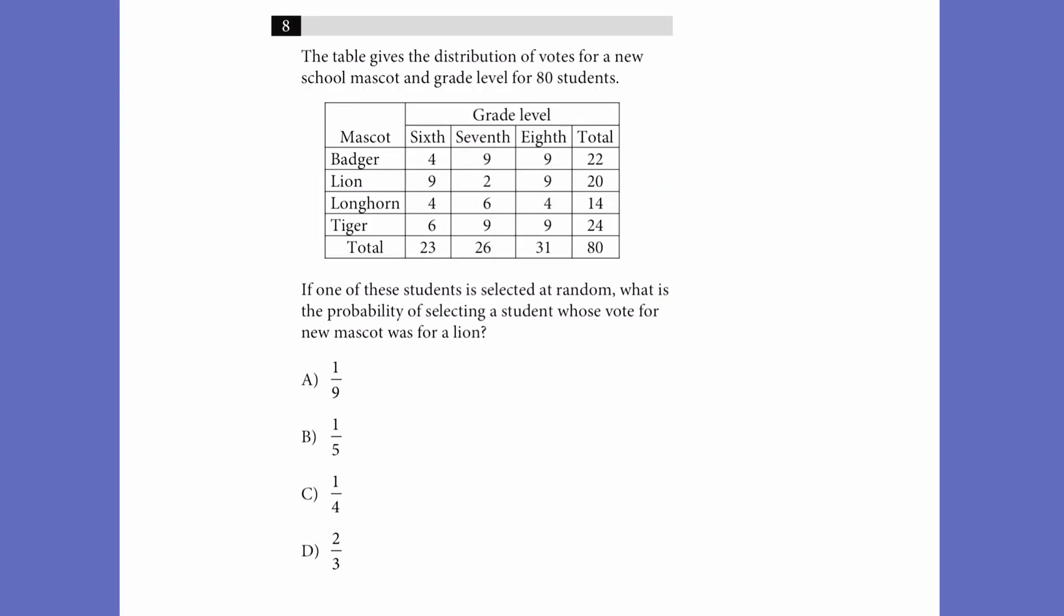So this is the trickier type of probability question that you'll see. It's reading these tables and deciphering what they want you to pick out of the table. So you need to make sure that you're reading the right values for these. So the table gives the distribution of votes for a new school mascot and grade level for 80 students. If one of these students is selected at random, so that's the pool we're choosing from, is just all of the students, what is the probability of selecting a student whose vote for the new mascot was a lion? So we don't really care about grade level at all here. We just care about who wanted the lion in total. So in this case, we see grade level on top here, and we see the mascots here on this side. So for total number of students, we have 80. It even says that up there. So out of those 80 students, 20 wanted the mascot to be a lion. So those are the two numbers that we're working with.